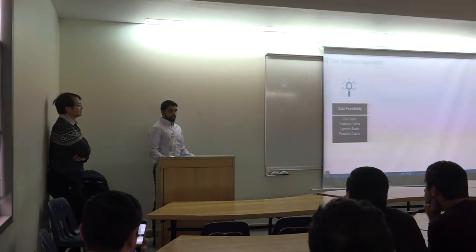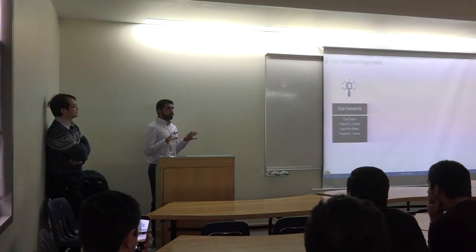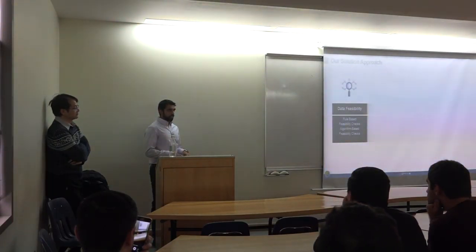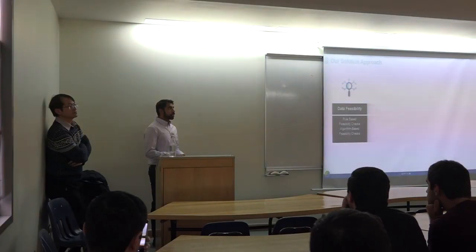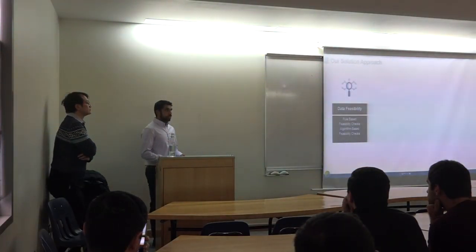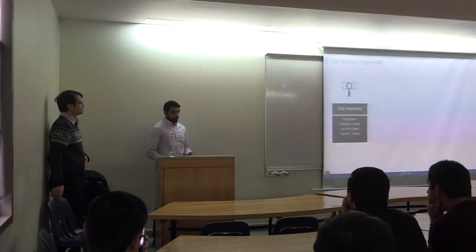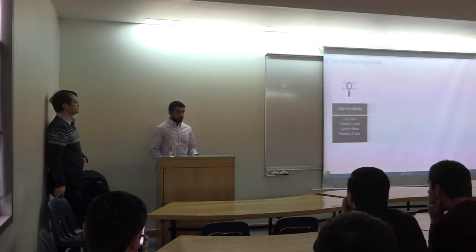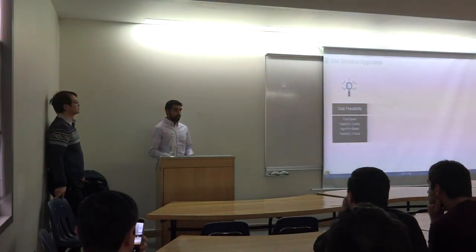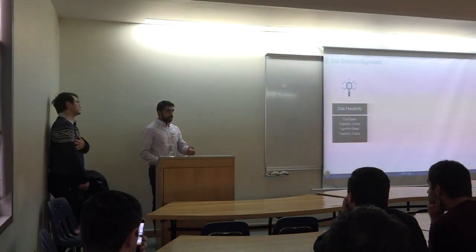Wherever you work, this is a fact of life: whatever data you receive is probably wrong. So the first thing you need to do is check it. You need to make sure that the data is clean, because if the data is bad, then your result will be bad. So the first thing we do is we have a series of checks, both rule-based and algorithmic-based, to make sure that the data we feed into our solution is clean.